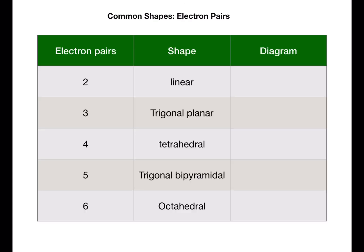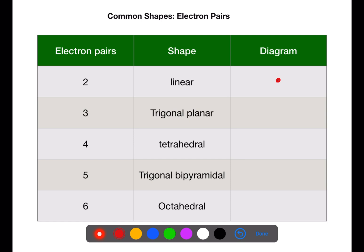Let's first have a look at the common shapes that electron pairs can make. This is for the total number of electron pairs, both bonding and non-bonding. If there are two, you will have a linear shape. If you have three, these make a trigonal planar shape. If you have four, these make a tetrahedral shape. If you have five, this will be trigonal bipyramidal, and if you have six, this will be octahedral. This will be the shape that the electron pairs themselves will make.